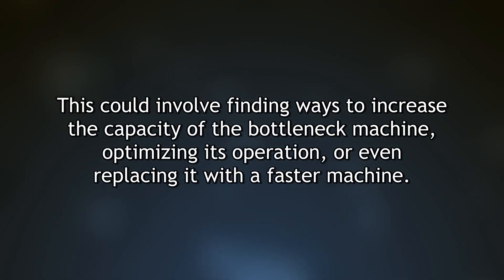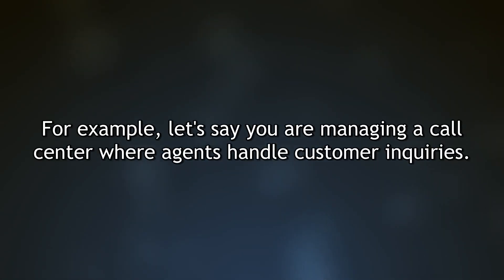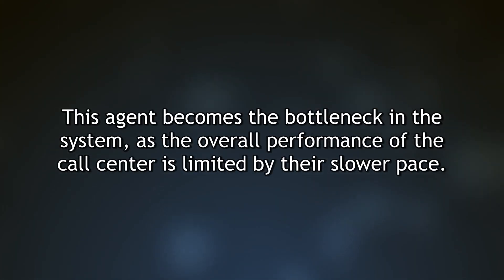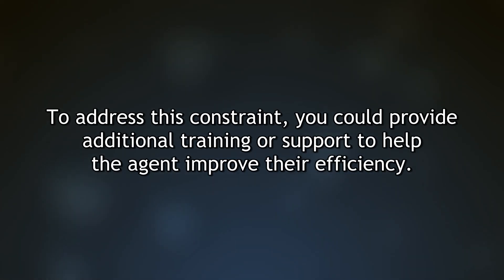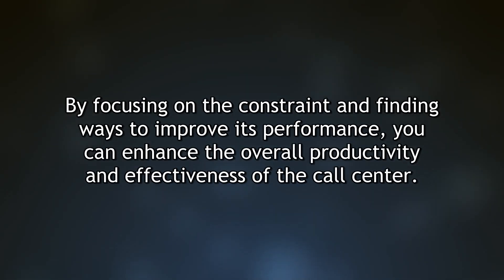Imagine a manufacturing process where one machine is significantly slower than the others, becoming the bottleneck. No matter how fast the other machines work, overall production is limited by that machine. By focusing on the constraint, you can increase its capacity, optimize its operation, or replace it. In a call center example, an agent averaging 10 minutes per call versus the standard 5 minutes becomes the bottleneck, addressable through additional training or workload redistribution.